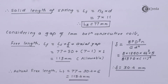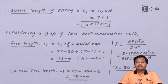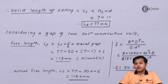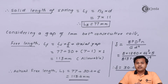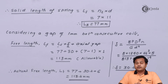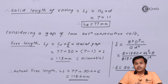The actual free length is recalculated using the same formula with the actual deflection of 30.4 mm plus the axial gap of 6 mm added to the solid length of 77 mm, giving the final free length. This is the last parameter considered in the design of this helical spring, and we complete the numerical. To review: we determined allowable shear stress, Wahl's factor, wire diameter, mean diameter, number of active and total coils, solid length, actual deflection, and finally the free length.